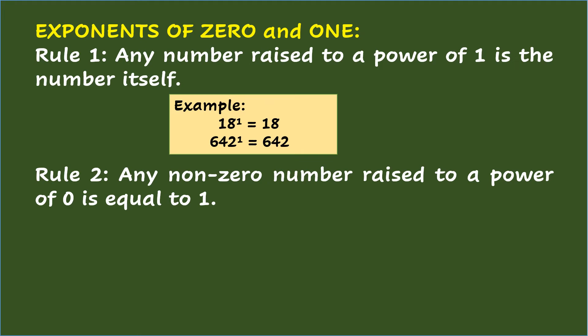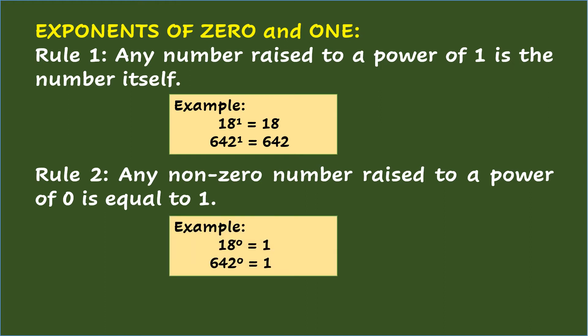Rule 2: any number raised to a power of 0 is equal to 1. For example, 18 raised to the power of 0 equals 1, and 642 raised to the power of 0 equals 1.